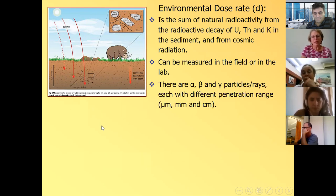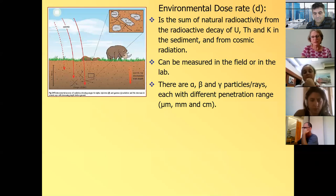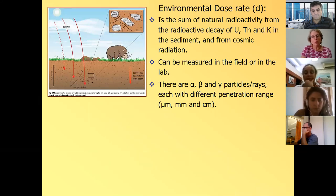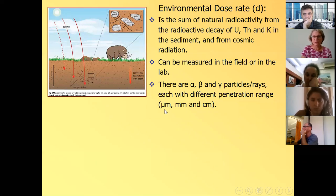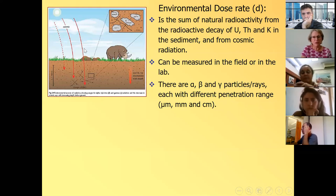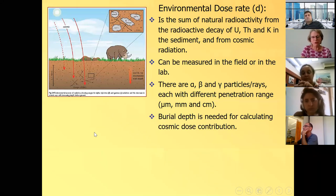And the radioactivity is the sum of all the natural radioactivity from the decay of the uranium, thorium, and potassium in the sediment and from the cosmic radiation that comes from the cosmos. It can be measured in the field or in the lab or by measuring the chemical elements. And we have, we get each one of these elements emits either alpha, beta and gamma particles, each with a different penetration range.